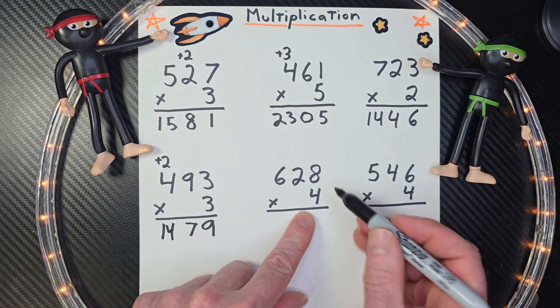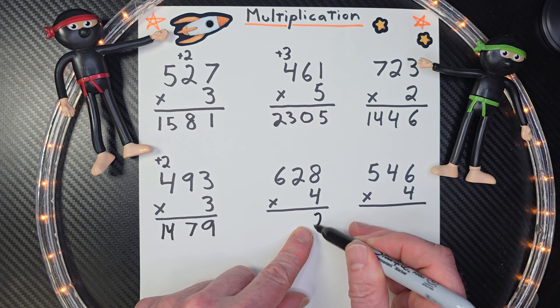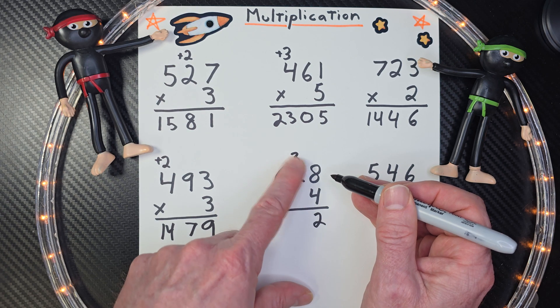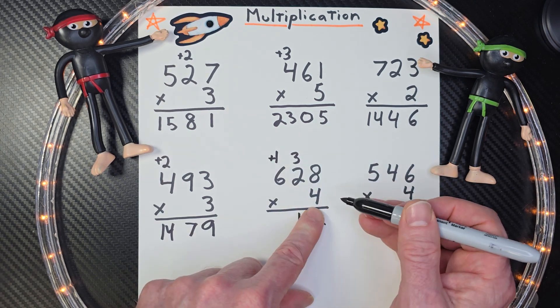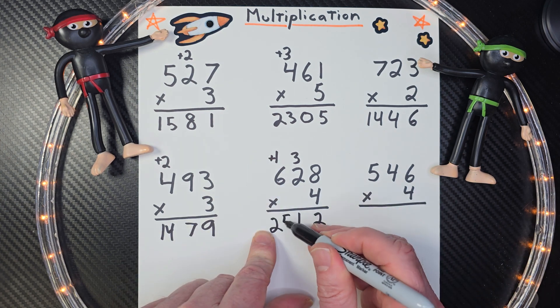Here we go to the next problem. 4 times 8. What is it? 32. 32. Put the 3 up here. 4 times 2 is 8, 9, 10, 11. Put the 1 up there. Got to add that 1. 4 times 6 is 24, 25. All right.